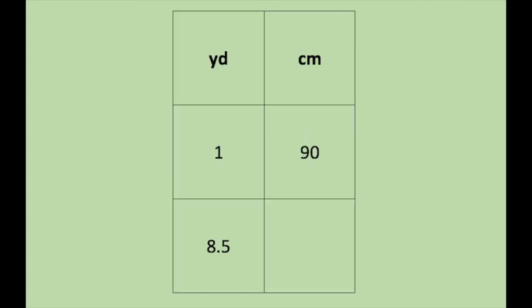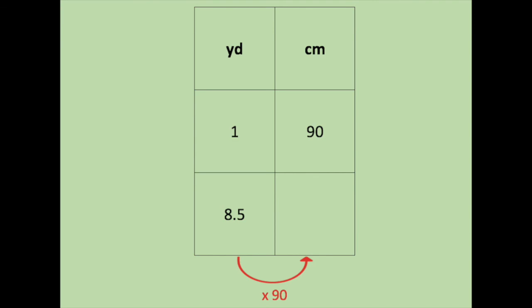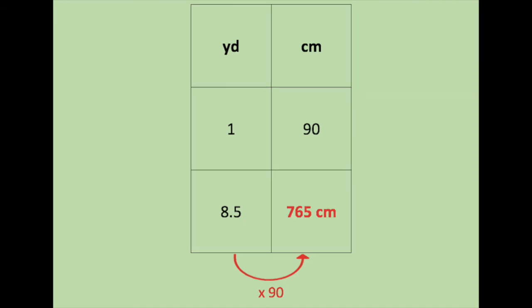Last example: 8.5 yards is how many centimeters. The units we use: yard, centimeter. The rule: 1 yard is 0.9 meters or 90 centimeters. So 1, 90. That's the ratio, 1 to 90. Finally, the information provided: 8.5 yards is how many centimeters. From 1 to 90, I have to multiply by 90. So I do 8.5 times 90, and the answer should be 765 centimeters.